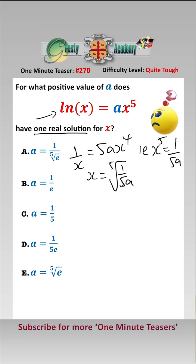And the value must be the same as well. So plugging those both in we have that log of the fifth root of 1 over 5a must equal a times by the fifth root of 1 over 5a to the power of 5. That one there clearly, fifth root to the power of 5 simplifies to a over 5a which is 1 fifth.